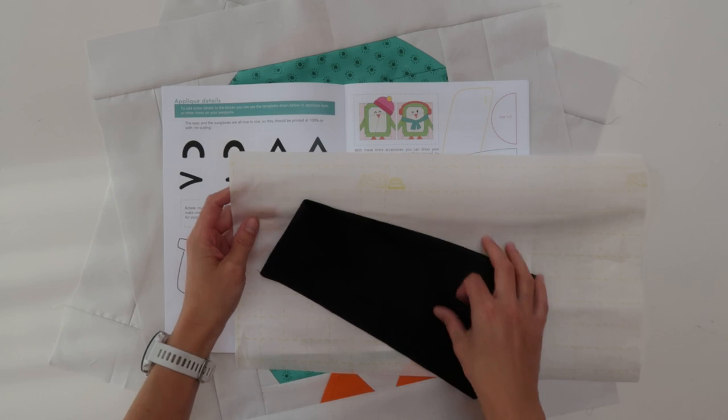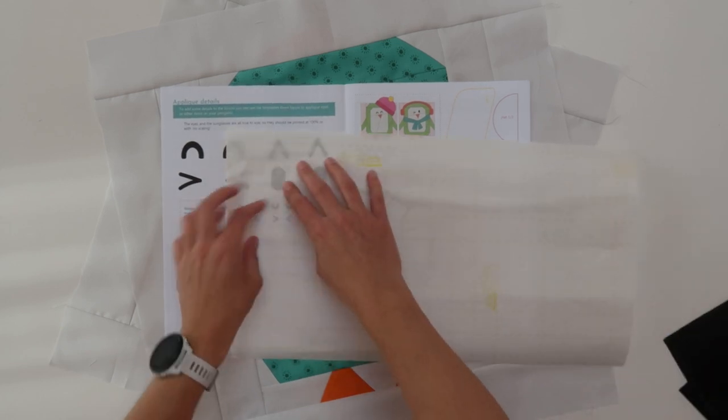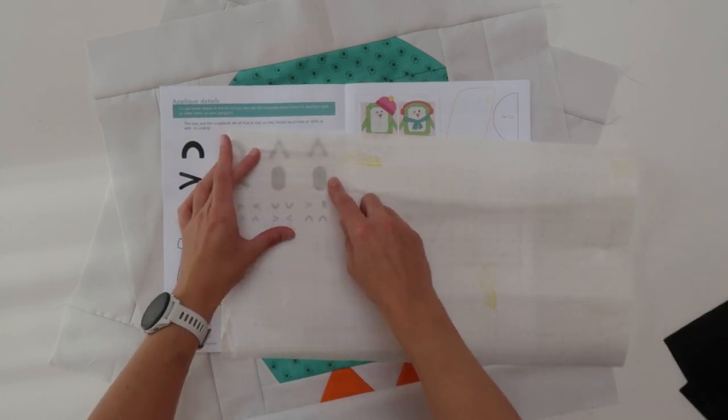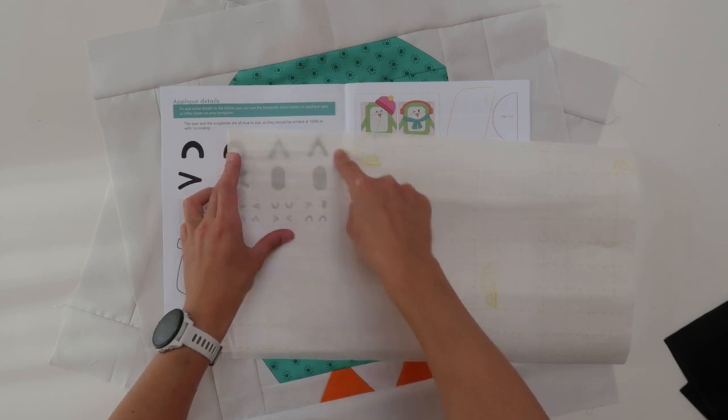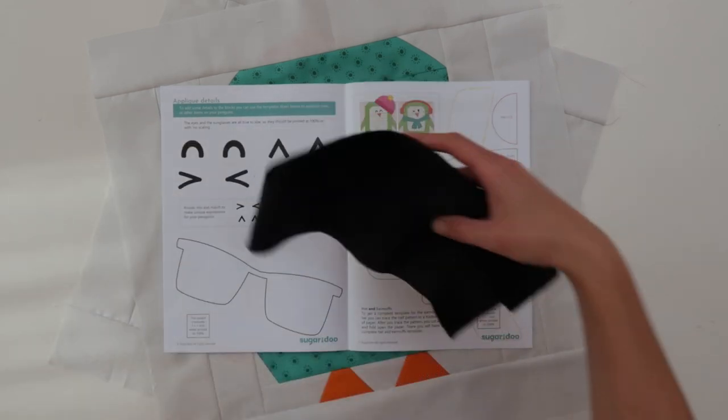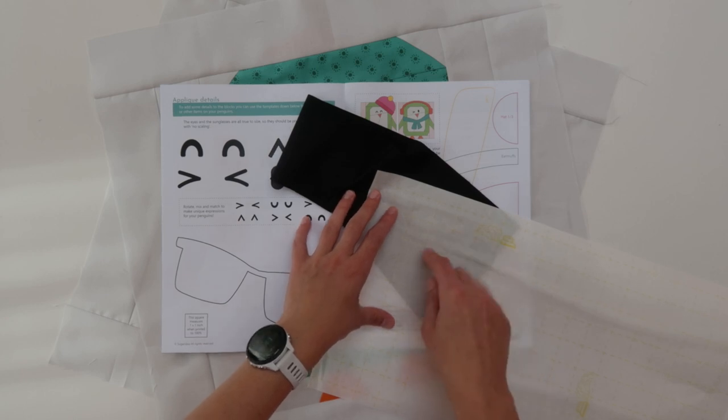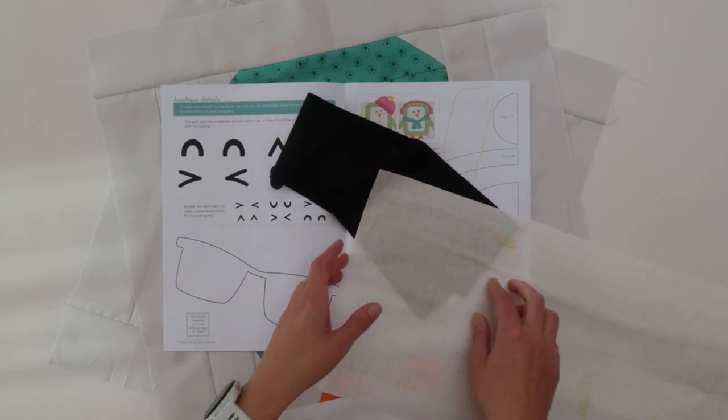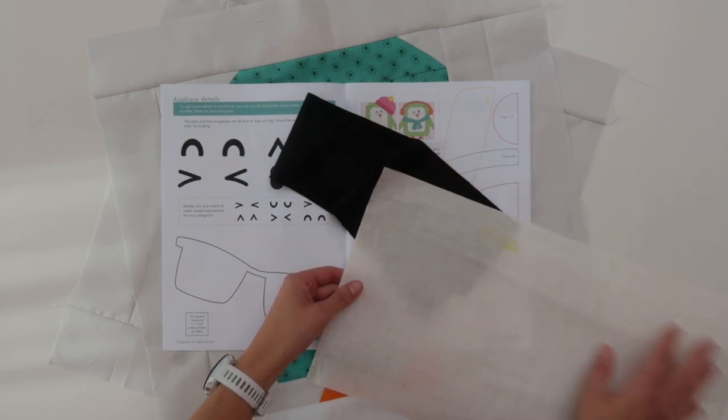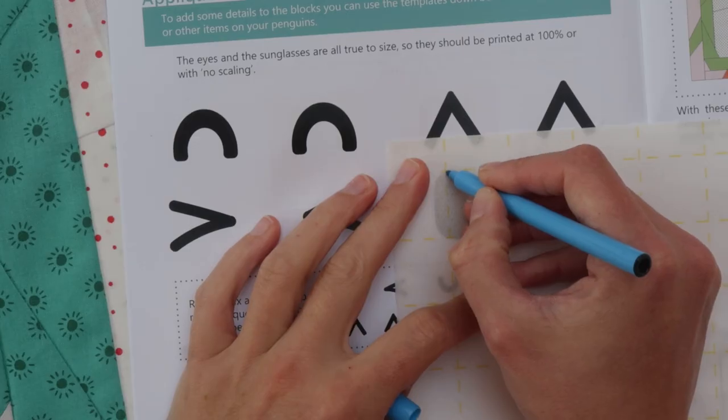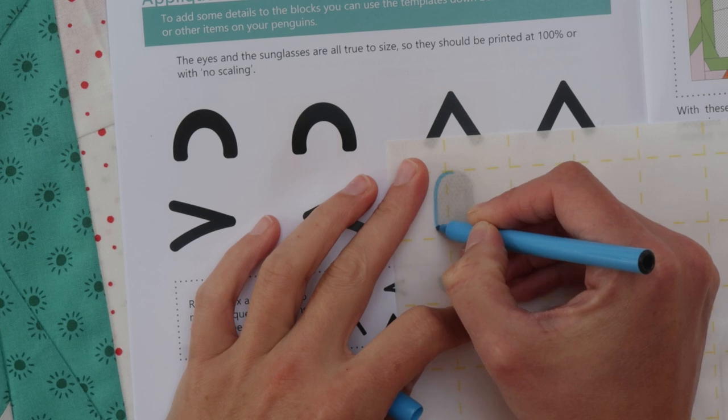So what I will do is trace the eyes to my steam a seam, then I will cut around it roughly, stick that to my black fabric and then cut out the shape exactly. Then I can peel away the other side and press it on to my penguins.